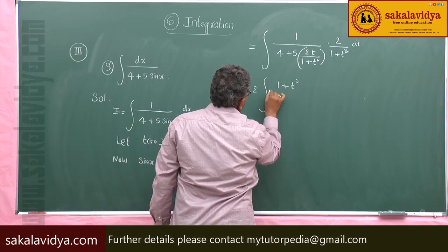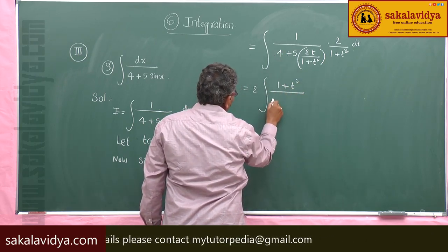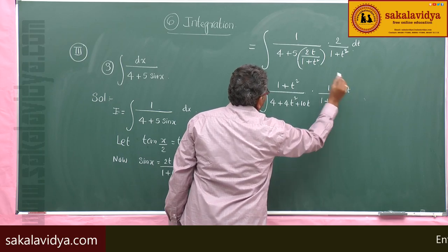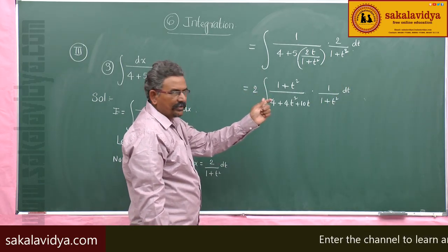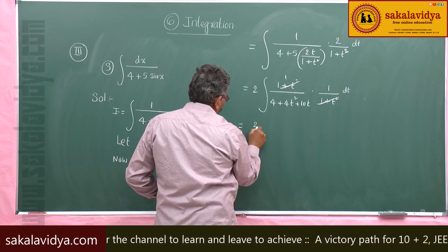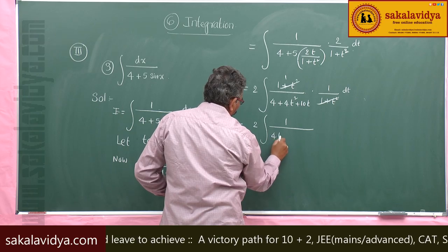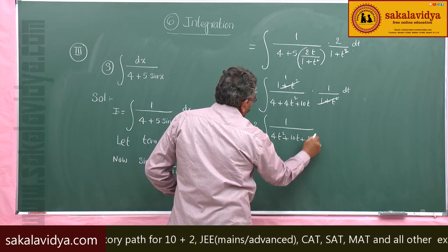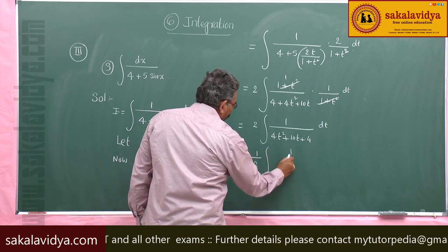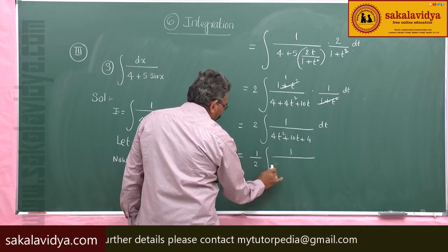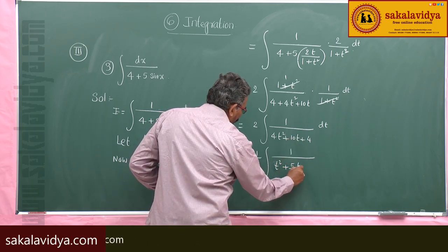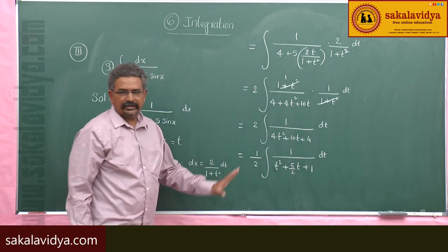Now let us substitute. This becomes integral 1 by [4 plus 5 times 2t by (1 plus t squared)] times [2 by (1 plus t squared)] dt. Taking LCM as (1 plus t squared), we bring it up and get 2 times integral (1 plus t squared) by [4 plus 4t squared plus 10t] times [1 by (1 plus t squared)] dt. The cancellation will take place — the (1 plus t squared) terms cancel.